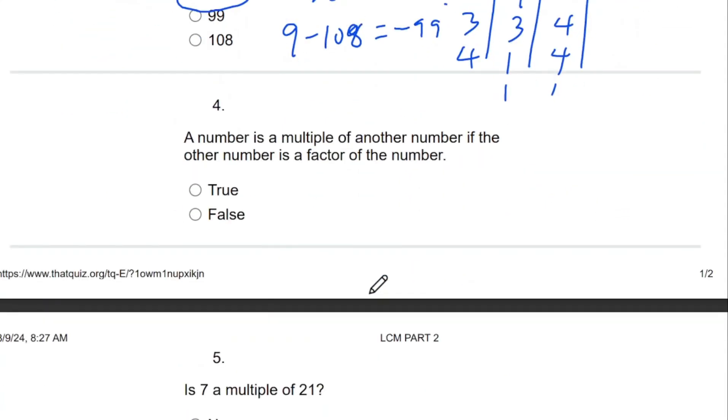Question 4: A number is a multiple of another number if the other number is a factor of the number. Let's look at it. If you have a number that is a multiple of another number, if the other number is a factor of the number. Let's say the number is 12. A number will be a multiple of this number, and that is 3. If the other number, that's this 3, is a factor of this number.